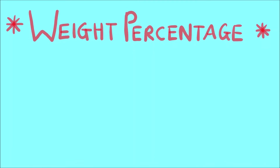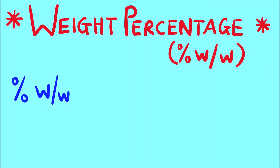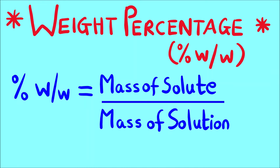Hello everyone, welcome to Chemazon Complete Chemistry. In today's video we are going to see what is weight percentage. It is another way of measuring the concentration of a solution, or we can say it is one more type of concentration term. It is denoted by percentage w/w. The formula for percentage weight by weight is: mass of the solute divided by mass of the solution, into 100.